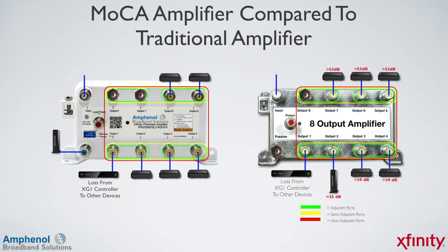The DOCSIS device is passive, and at installations where there isn't enough DOCSIS signal, a MOCA amplifier can be used. The MOCA amplifier also has low port-to-port isolation. With the MOCA amplifier, the passive port can be used for MOCA and has a loss from the XG1 controller of less than 30 dB. To the adjacent ports: less than 25 dB; to the semi-adjacent ports: less than 30 dB; and to the non-adjacent ports: less than 35 dB.